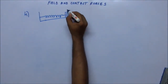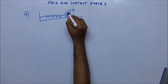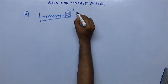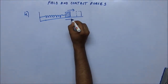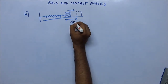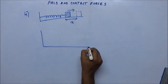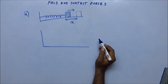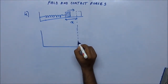Now what we do is we bring the block to a certain distance to its right. Suppose this is the displacement x that we have caused to the block. Now, since the spring is attached to the block, there will be some elongation in the spring.